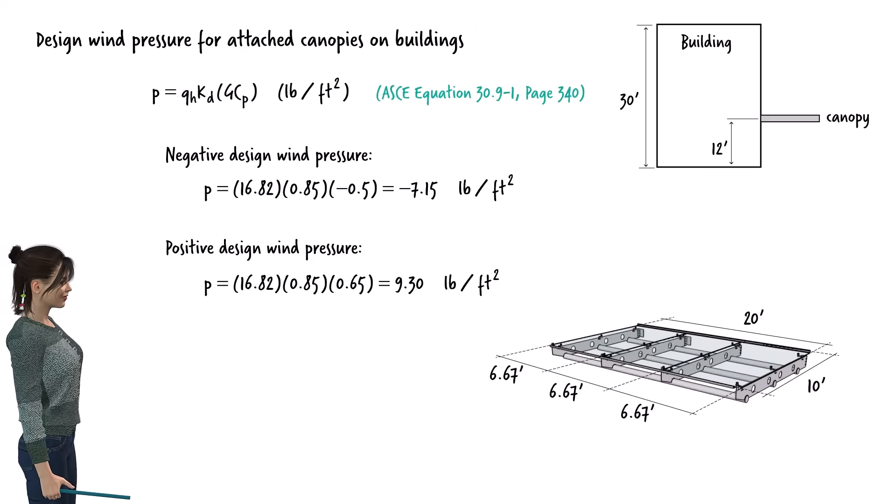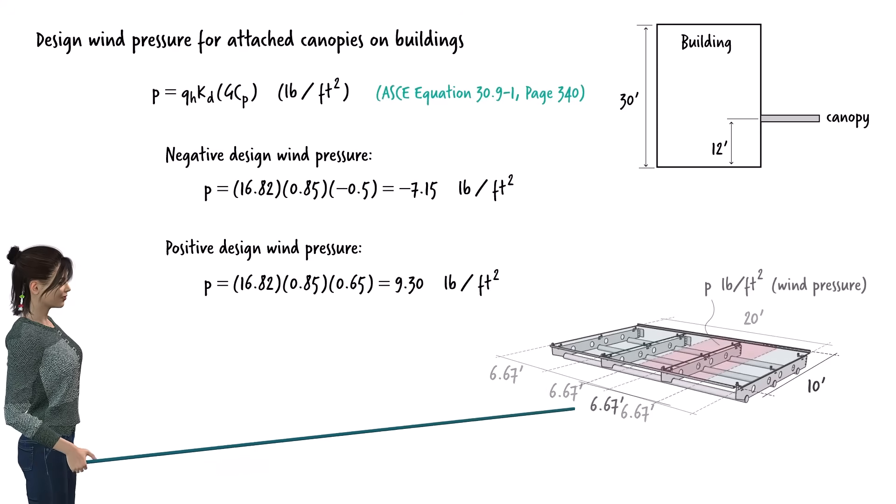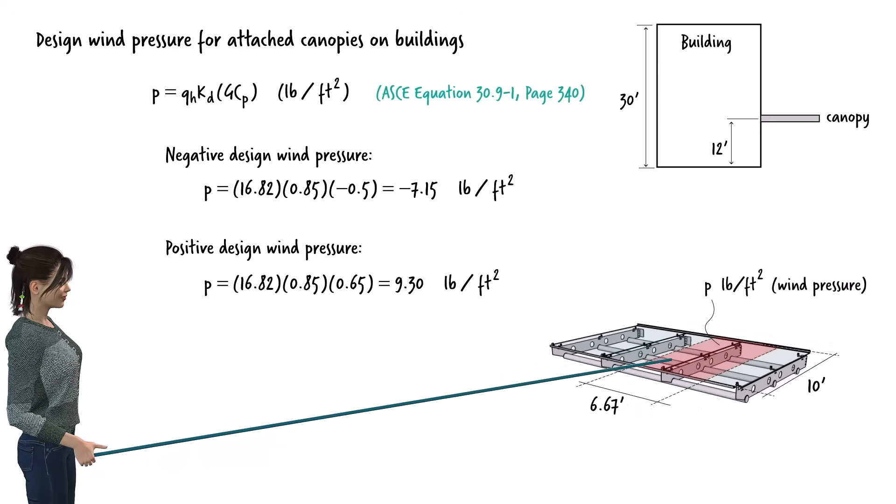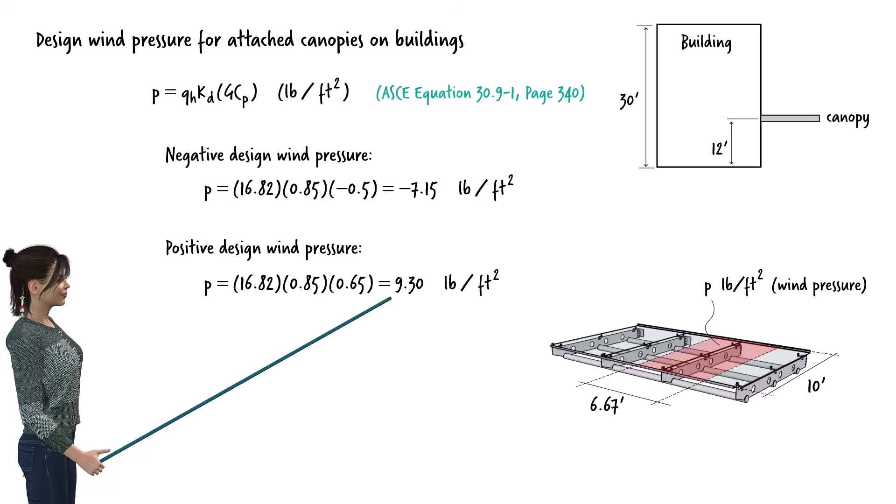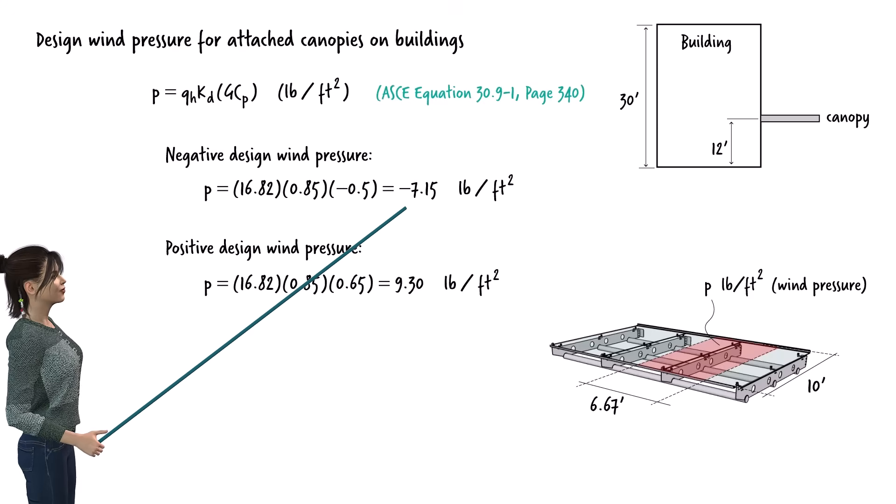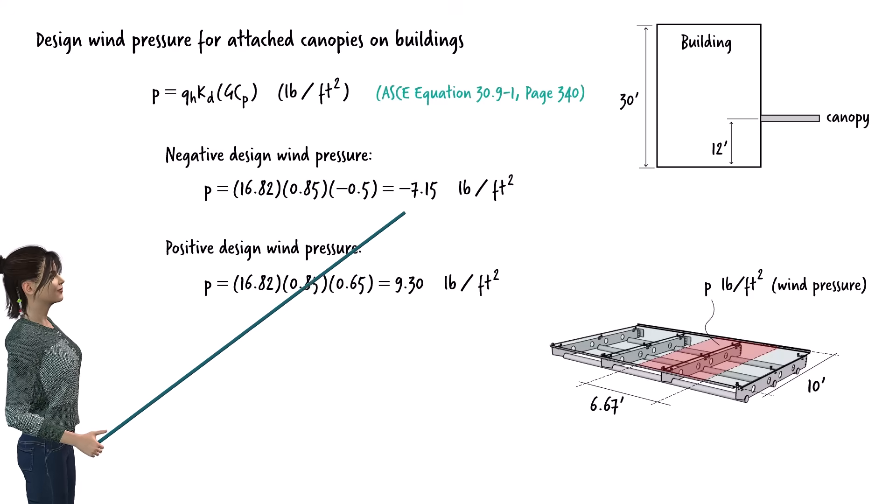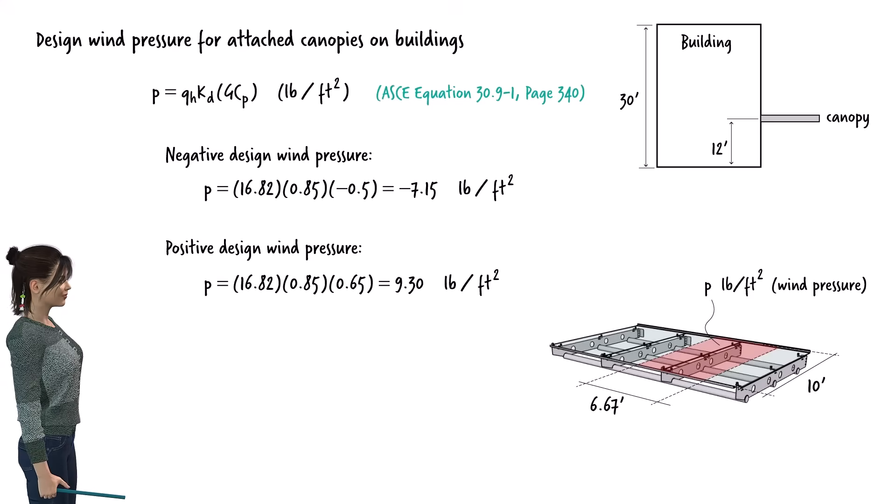The top surface of the canopy rests on four cantilever beams. The largest tributary area of the top surface, directly supported by a beam, has a width of 6.67 feet. The wind pressure for this area is either positive 9.3 pounds per square foot or negative 7.15 pounds per square foot. Multiplying the design wind pressure by 6.67, we get the design wind load for the beam.